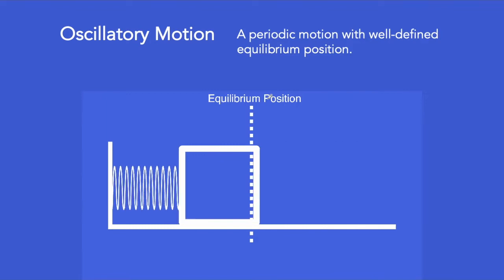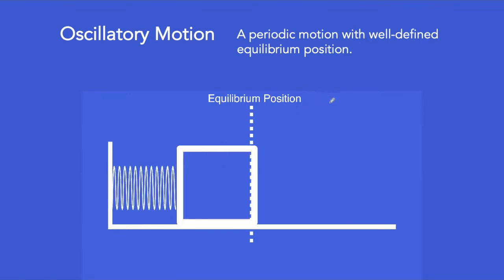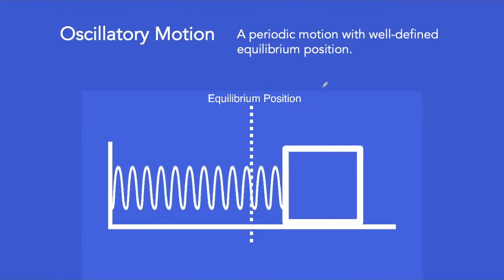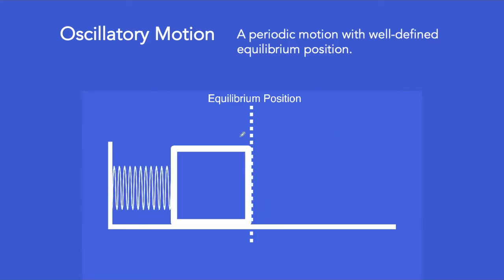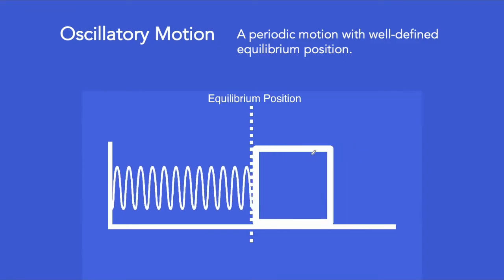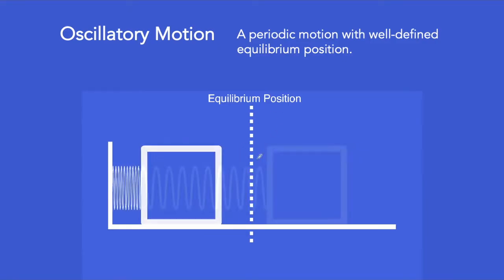In general, equilibrium position refers to a position where the system has minimum energy. If natural forces are acting on the object, these forces tend to restore the object to its equilibrium position.